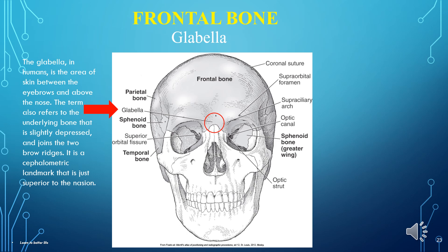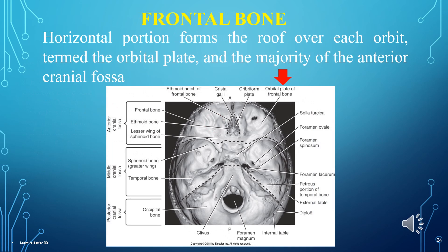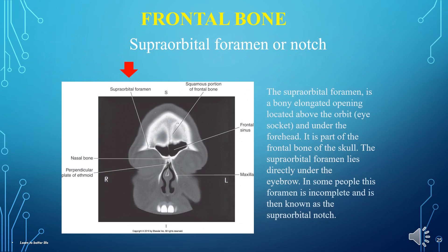The glabella is a cephalometric landmark just superior to the nasion. The horizontal portion forms the roof over each orbit, termed the orbital plate, and the majority of the anterior cranial fossa. The supraorbital foramen is a bony elongated opening located above the orbit (eye socket) and under the forehead. It is part of the frontal bone of the skull and lies directly under the eyebrow. In some people this foramen is incomplete and is known as the supraorbital notch.